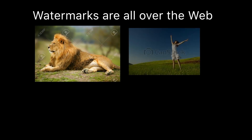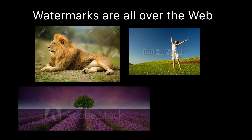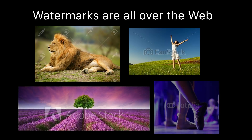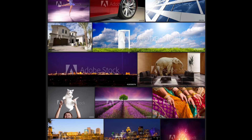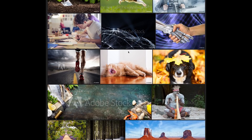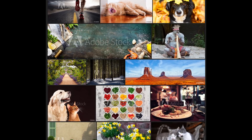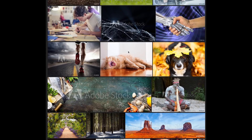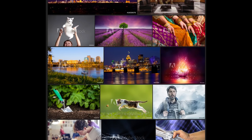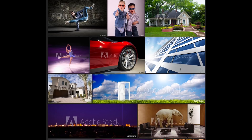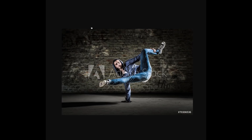Visible watermarks are used to mark and protect the copyrights of many millions of images on the web. They are extensively used by stock image services in their image previews. Watermarks are usually added with low opacity so that the image content will still be visible while being marked by its owner.